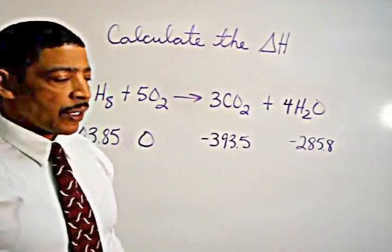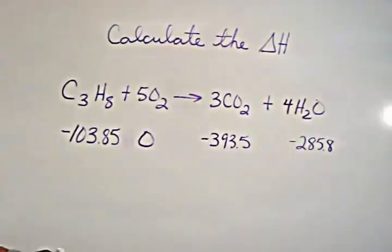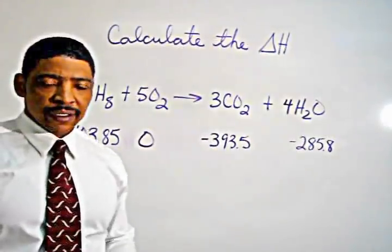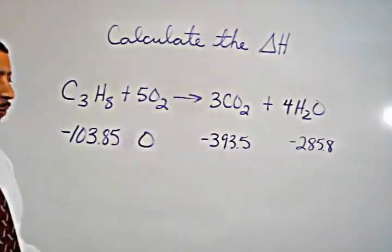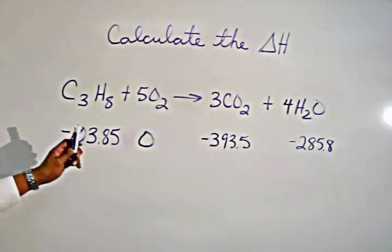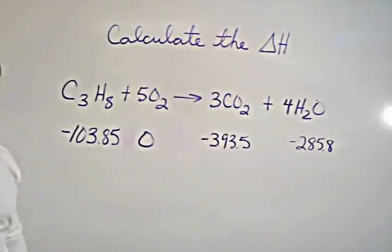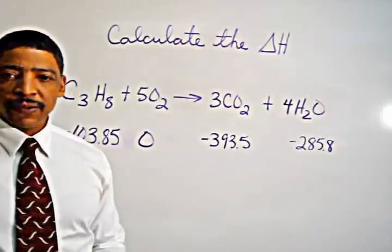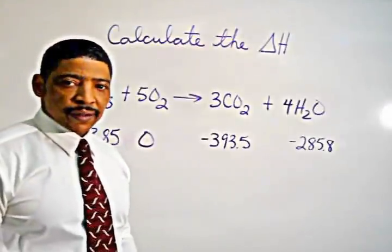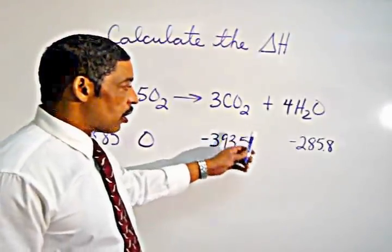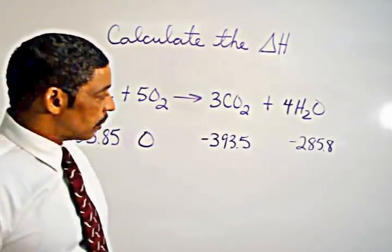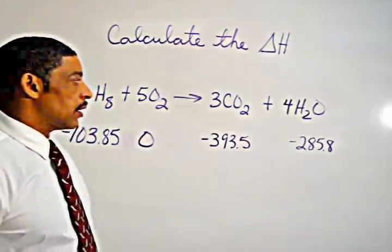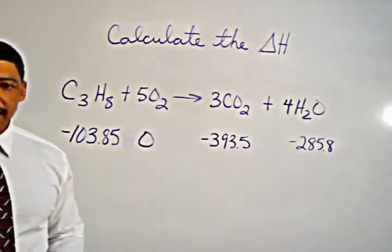Suppose we are asked to calculate the delta H for the following reaction, where propane reacts with oxygen to produce carbon dioxide and water. From a table of standard heats of formation, the heat of formation for propane would be negative 103.85 kilojoules per mole. The heat of formation for any element will always be zero. The heat of formation for carbon dioxide gas is negative 393.5 kilojoules per mole, and the heat of formation for water is negative 285.8 kilojoules per mole.